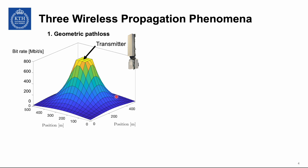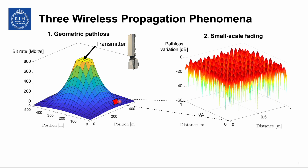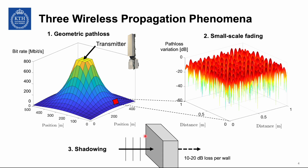If you zoom in on a particular area, in addition to these global trends we also have fast variations called small-scale fading, which can be very rapid. In small distances on the order of the wavelength, we can have path loss variations of many tens of dB — so sometimes we receive only a hundredth of the average, and sometimes more than average. Finally, when large objects are in the propagation environment, signals passing through a big wall might lose another 10 to 20 decibels. This is known as shadowing.